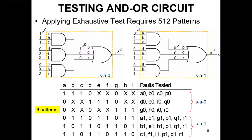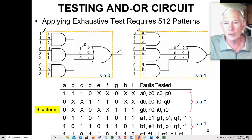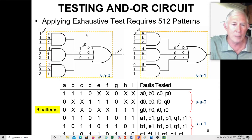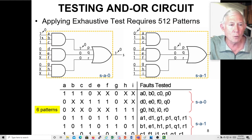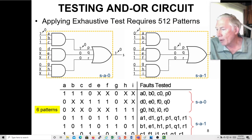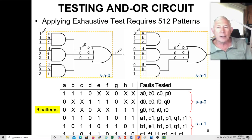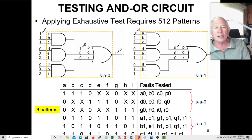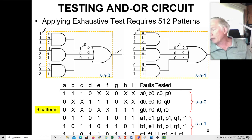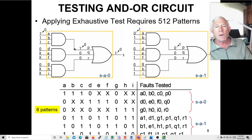If we want to apply exhaustive testing to this circuit with nine inputs — one, two, three, four, five, six, seven, eight, nine — you'd have to have 512 different patterns. As you can see, 512 patterns is a lot, and these aren't even complicated circuits: just three three-input AND gates and one three-input OR gate. So instead of exhaustive testing, we try to create a set of patterns that will exercise the circuit fairly well to eliminate stuck-at conditions.